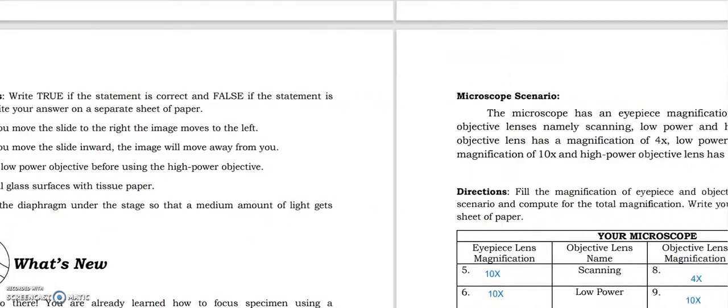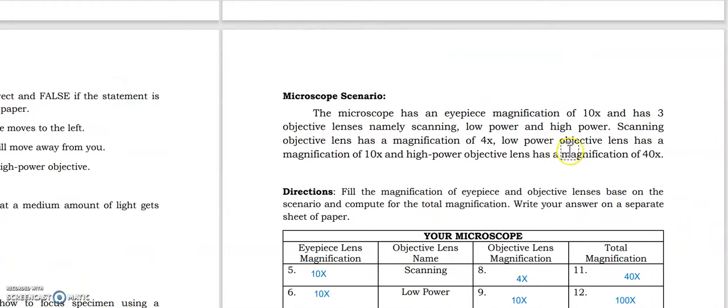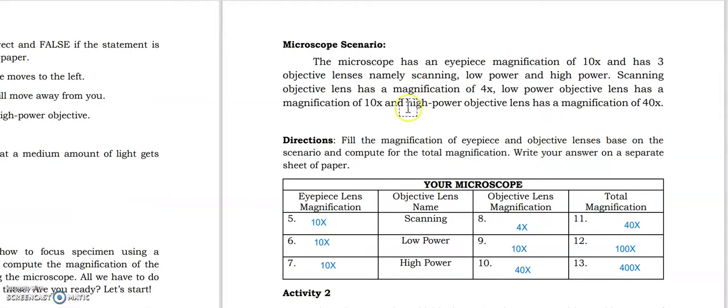Then we have the microscope scenario. So we have the scenario here: the microscope has an eyepiece magnification of 10x and has three objective lenses, namely low power and high power. Scanning objective lens has a magnification of 4x, low power objective lens has magnification 10x, and high power objective lens has magnification of 40x.